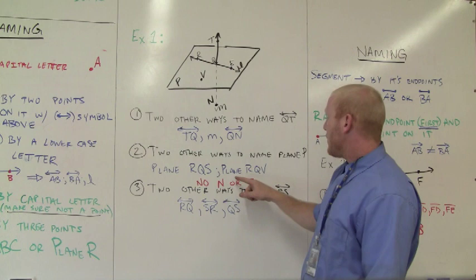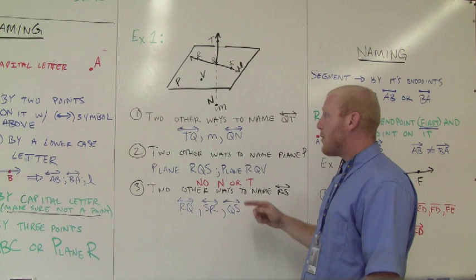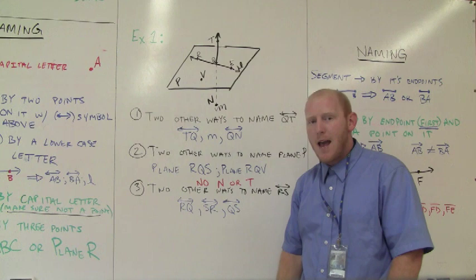Now you notice in red, it wrote not N or T. What that means is, point N and point T are actually not on that plane. And we'll get to that in a second.